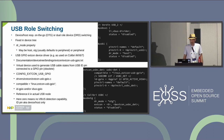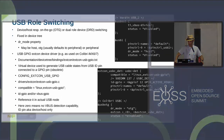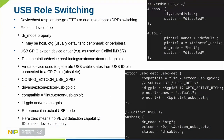USB role switching is something that often comes up in embedded devices — a port that can be either device or host. One way to configure this is in the device tree by hard-coding it with the dr_mode property. For a host-only port, set dr_mode to "host"; for device-only, set it to "peripheral".